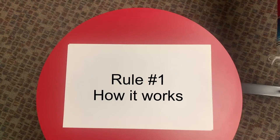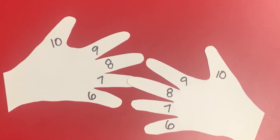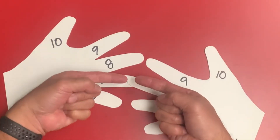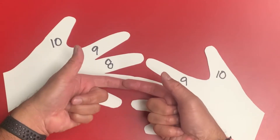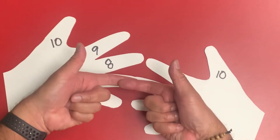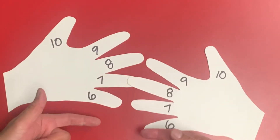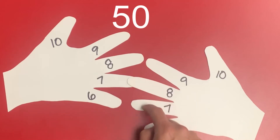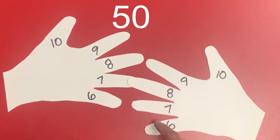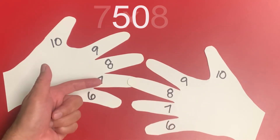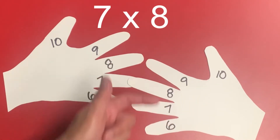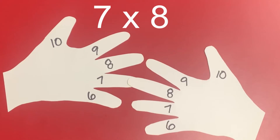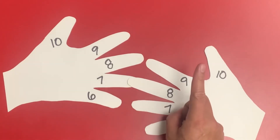So how does the first rule work? The fingers that are joined, plus the ones below, you count as 10. So there's 10, 20, 30, 40, 50 when you're doing multiplications of 7 times 8. That's the first rule.